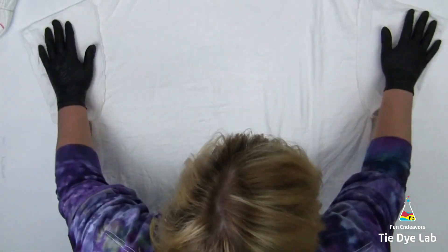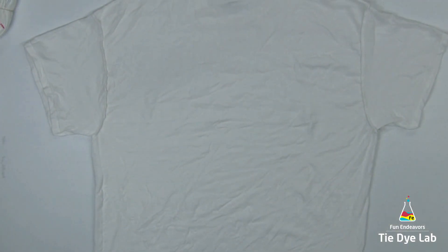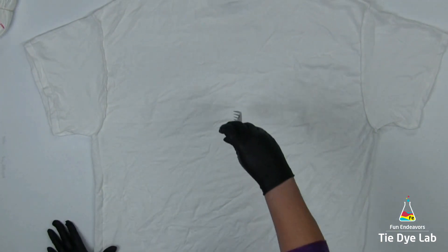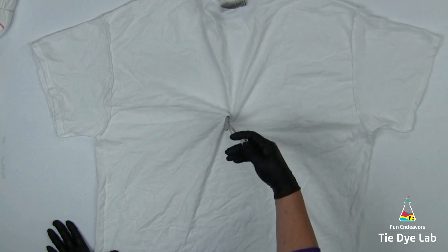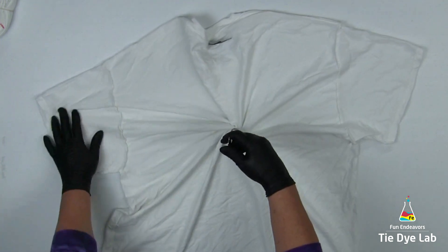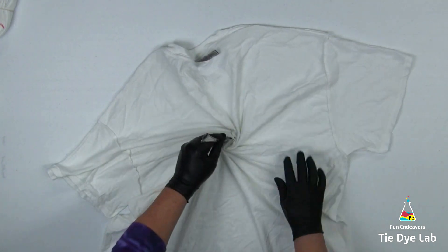For this spiral, I'm gonna begin the spiral on the back just because I would like to have the front of my shirt be nice and flat. Generally, whichever side you start your spiral on is the messier side of the shirt.